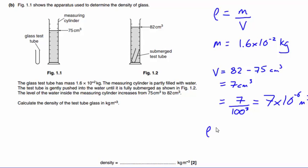So we can now plug those values in. Work out our density is 1.6 times 10 to the minus 2, divided by 7 times 10 to the minus 6.